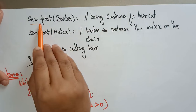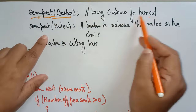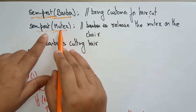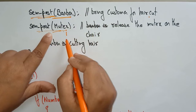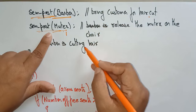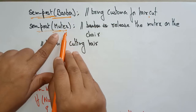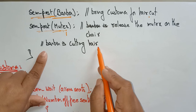The barber then calls signal(barber) to indicate he is doing his work — cutting hair for the customer. He then calls signal(access_seats) — the mutex is released back to one. Whenever a customer is in the barber's chair getting a haircut, the mutex is set to zero; after the haircut is complete and the customer is released, signal(mutex) is called to release the lock on the chair. This completes the barber's thread logic.